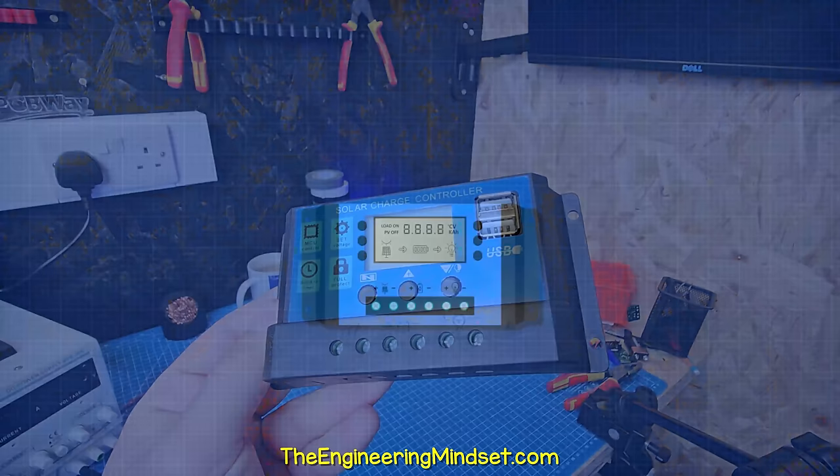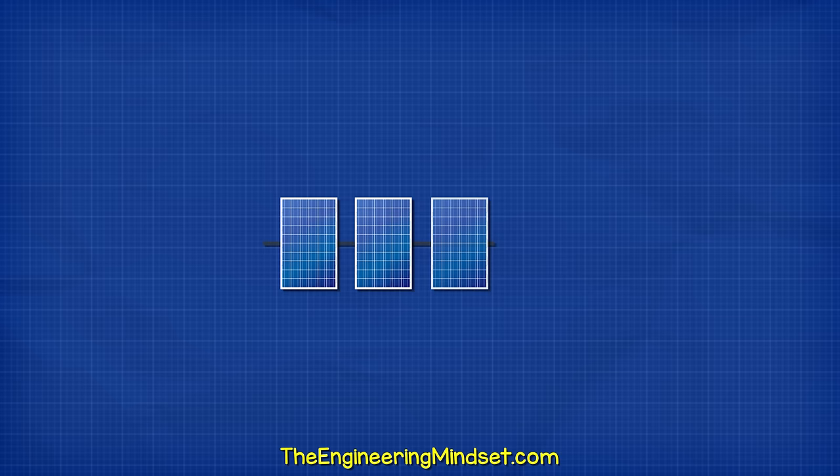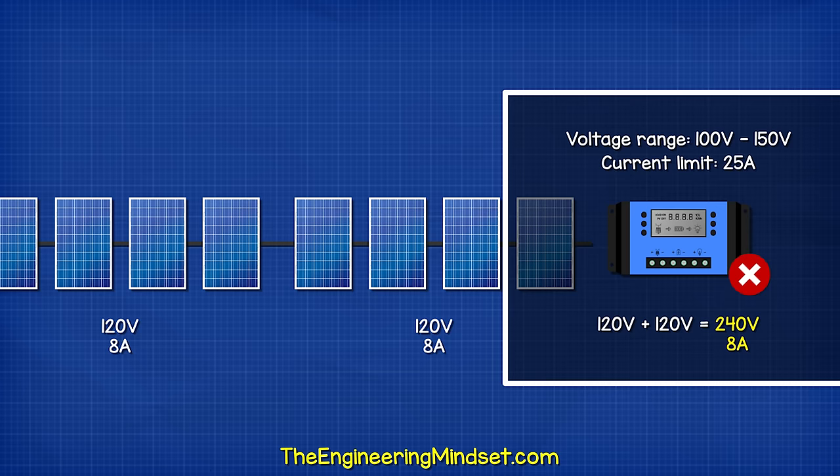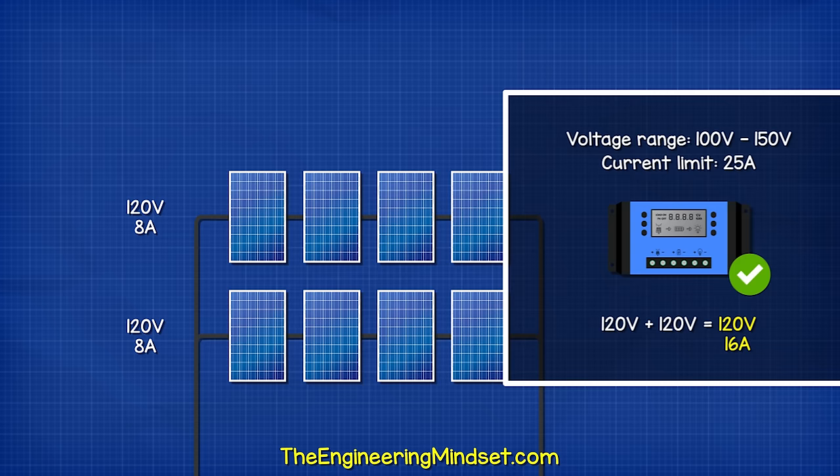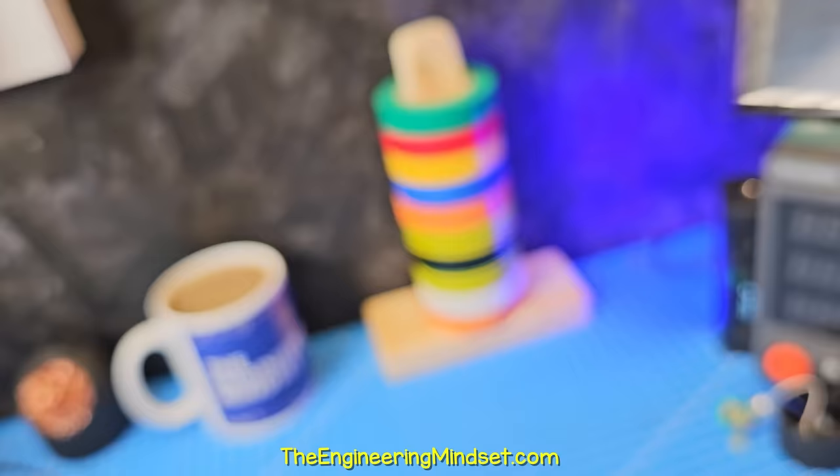We often use a combination of series parallel connections. The modules connect to a charge controller and inverter. These have a maximum and a minimum voltage and current to work. For example, this one might be 100 to 150 volts and 25 amps. Our string of modules has 120 volts and 8 amps. So we can't add another string in series because we will exceed the voltage limit. Therefore, we connect two strings in parallel, giving us 120 volts with 16 amps.